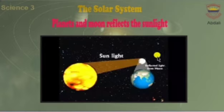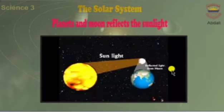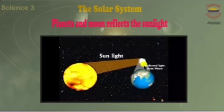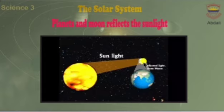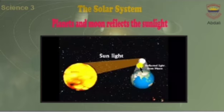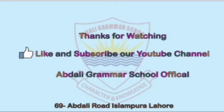Planets and the moon do not have their own light — they always reflect sunlight from the sun. Question: can the moon and the earth have their own light? No, the moon and the earth always reflect light from the sun.